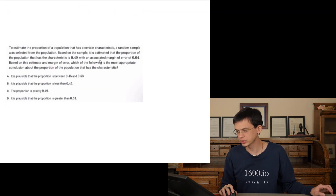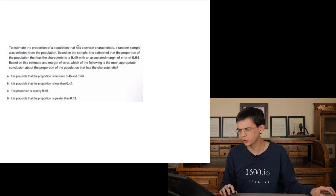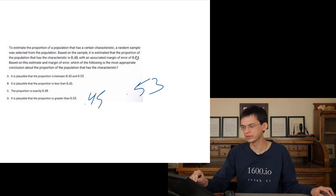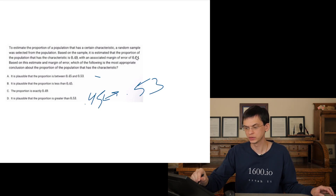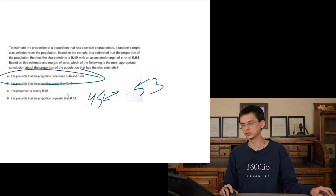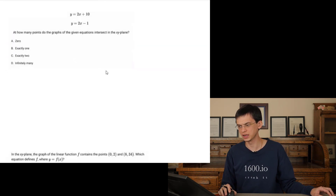Estimate a proportion of a population sample. They found the mean was 0.49 with a margin of error of 0.04. That means it can be as high as 0.53 or as low as 0.45 in the population. So it's plausible the proportion is between those two values; the other options don't make sense.